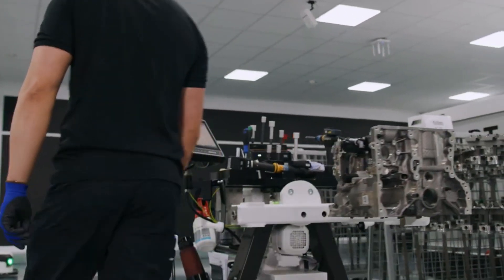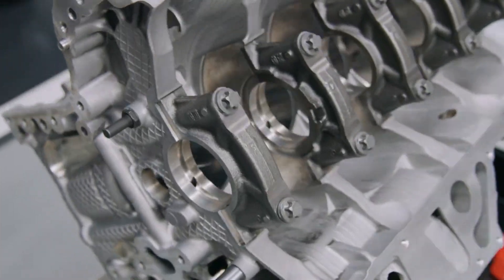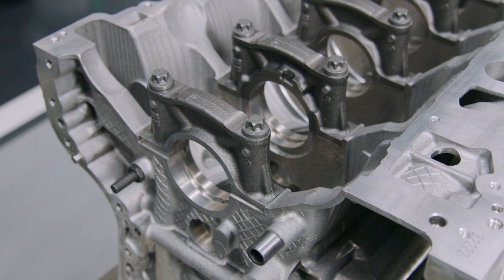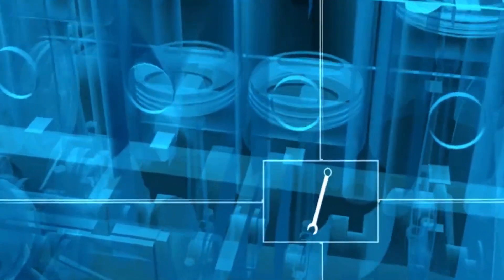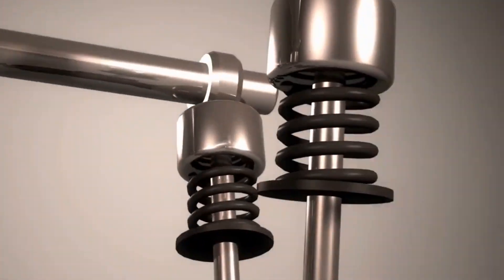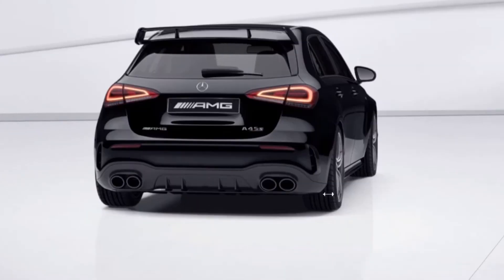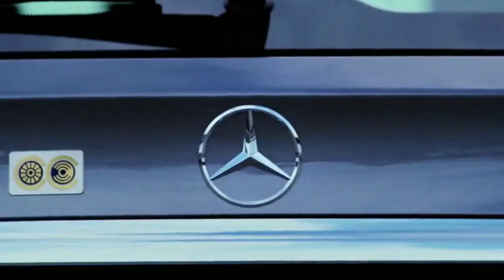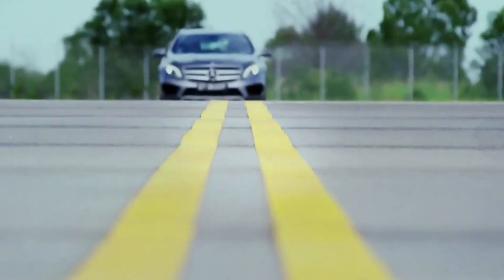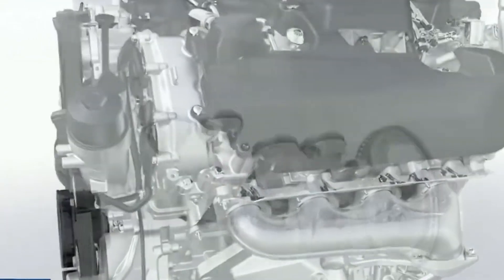The Mercedes M139 engine redefines what a four-cylinder engine can achieve, packing a jaw-dropping 416 horsepower. It leads the pack as the most powerful production four-cylinder engine ever created. This marvel of engineering powers vehicles like the Mercedes A45, CLA45, and GLA45, showcasing a perfect blend of compact design and raw strength. But what sets this engine apart isn't just its power, it's the precision, innovation, and sheer brilliance behind its design.